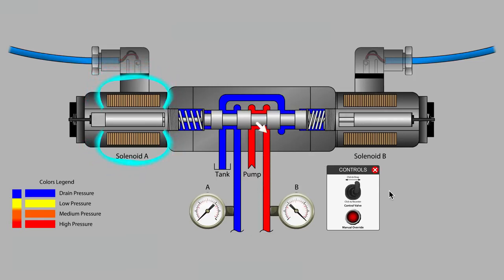When the valve is returned to neutral, notice that the gap between the pushpin and spool is now on the right-hand side. Whichever side of the valve has the pushpin gap has a slight force advantage when that solenoid is next energized.